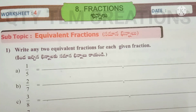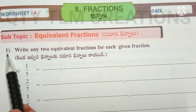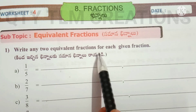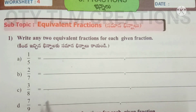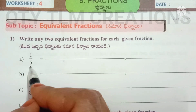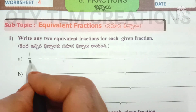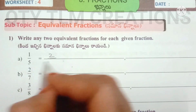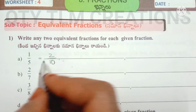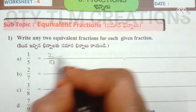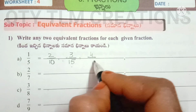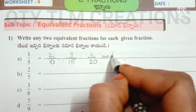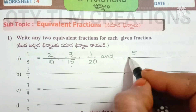Next, worksheet number four, subtopic: equivalent fractions. First question: write any two equivalent fractions for each given fraction. To get equivalent fractions, multiply or divide both numerator and denominator by the same number. For 1/2: multiply by 2 to get 2/10, by 3 to get 3/15, by 4 to get 4/20, and by 5 to get 5/25.